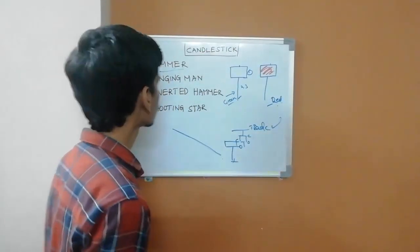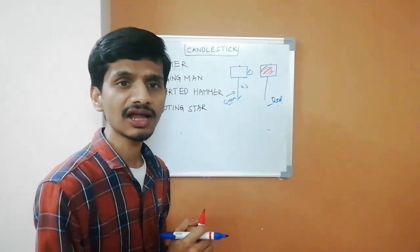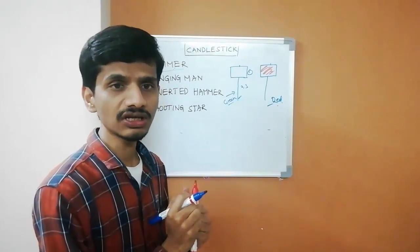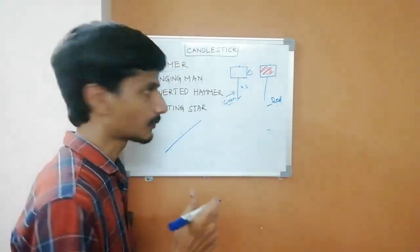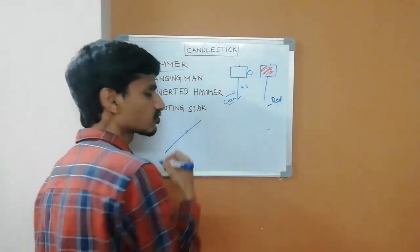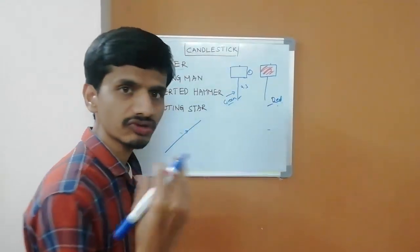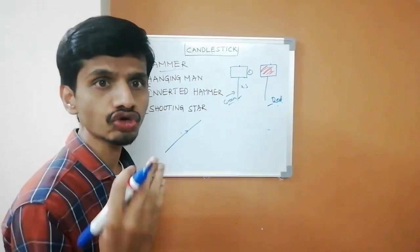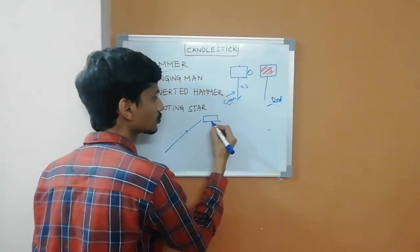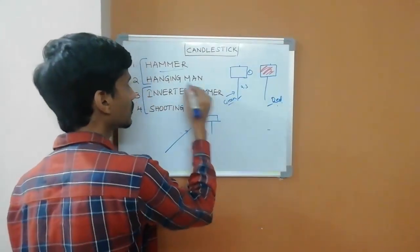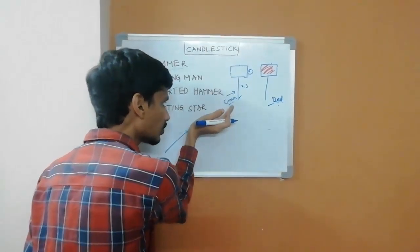This is a hammer candle. Next, the hanging man candle. The hanging man is the same type of pattern as the hammer. The difference is that price is in an upward direction — price is in an uptrend. Buyers are strong and price is moving upward. At that point in time, buyers are trying to dominate the market, but a bearish candle is formed. This is a hanging man candle — a bearish candle, indicating sellers are trying to dominate the market.